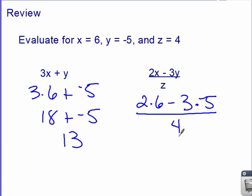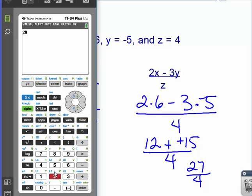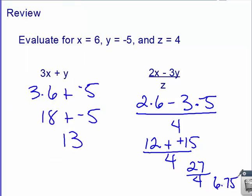Now we use order of operations to finish this out. I need to completely get the top part done before I can divide by 4. So we've got 2 times 6 gives us 12 minus 3 times negative 5 gives us negative 15, and then divide that by 4. We see a minus and negative, so that turns to plus a positive. That ends up being 12 plus 15, which is 27 divided by 4. Now we take our calculator and do the math. 27 divided by 4 equals 6.75. And yes, it's okay to have a decimal answer. Not a problem. You plug it in, you evaluate.